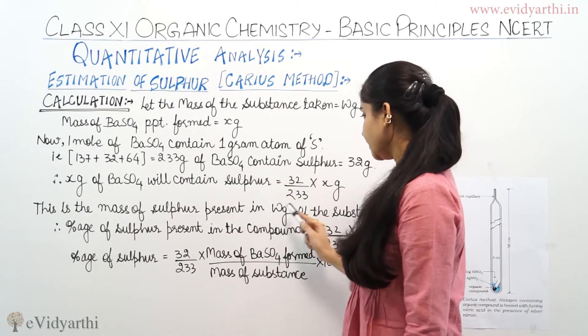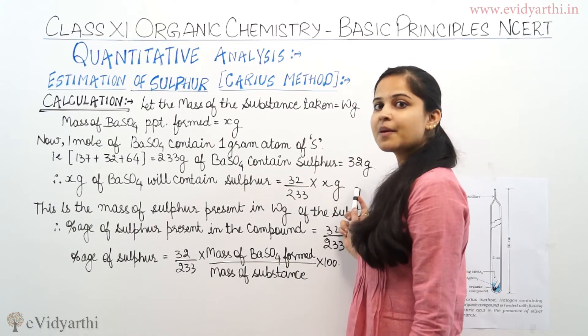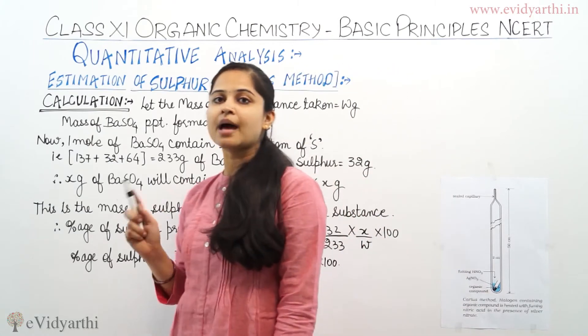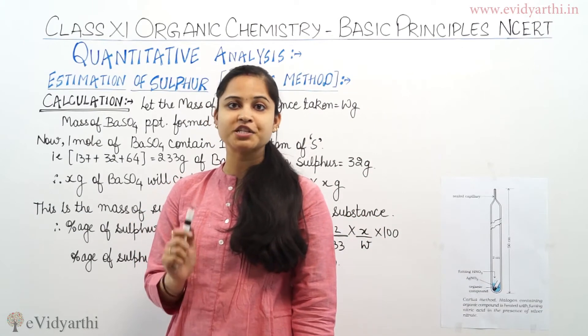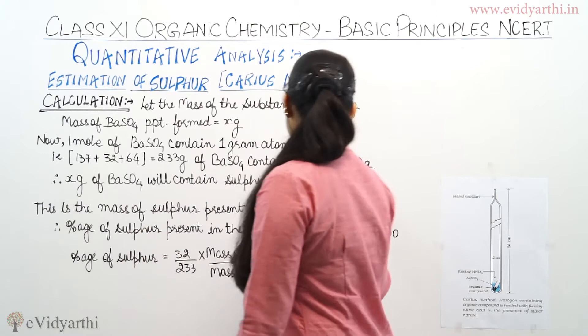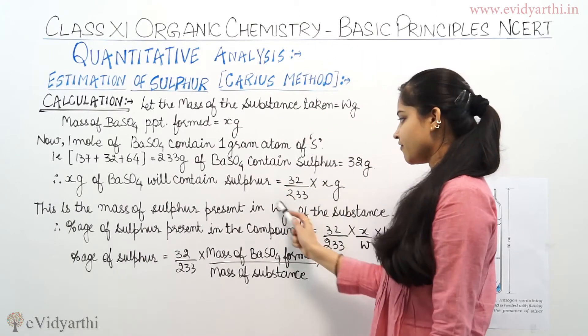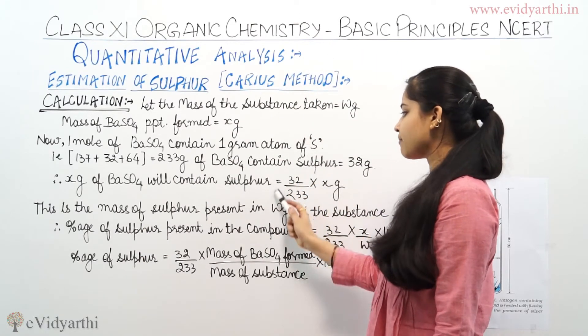This is the mass of sulfur present in W grams of the organic compound which is given to us. This is the mass of sulfur present in W grams of the substance.